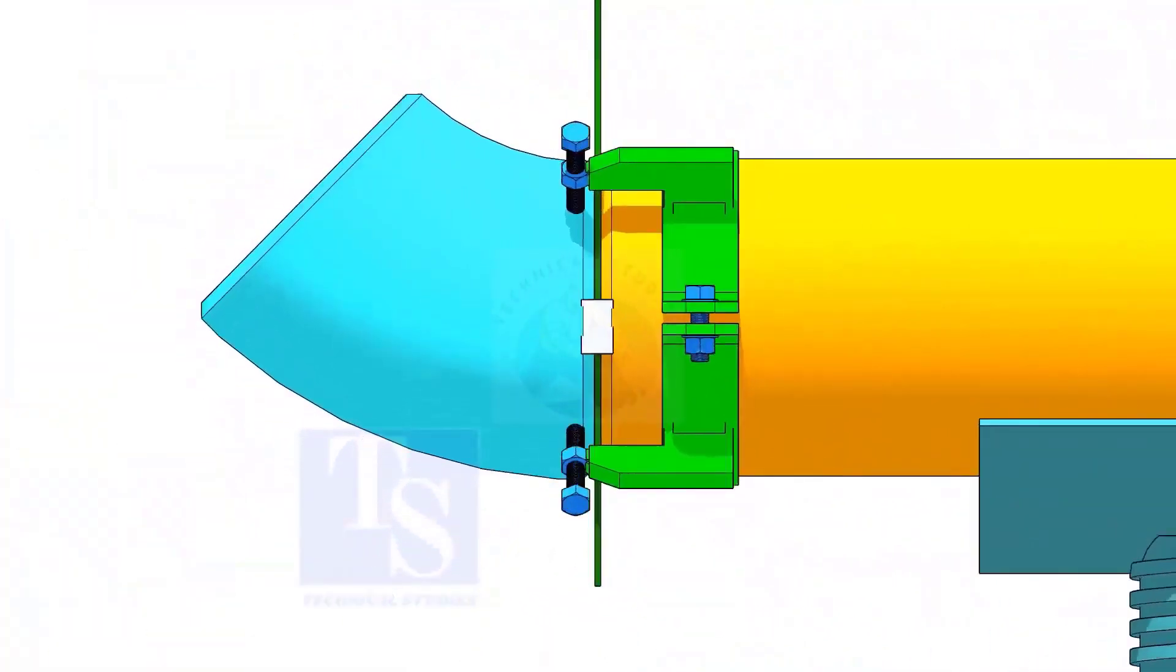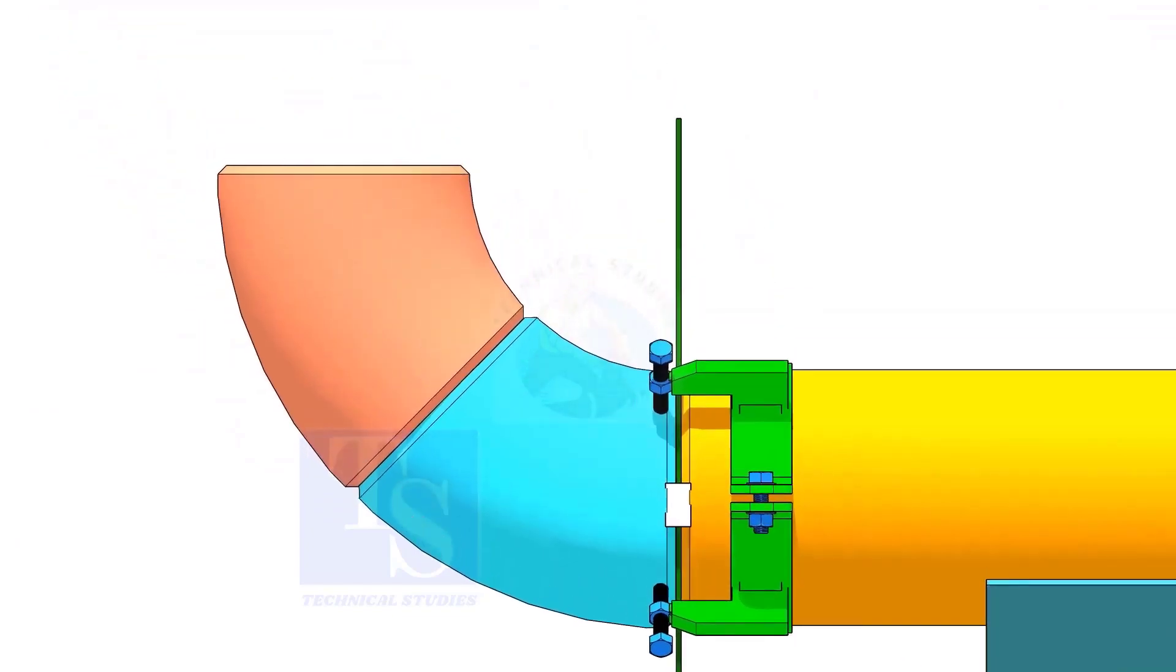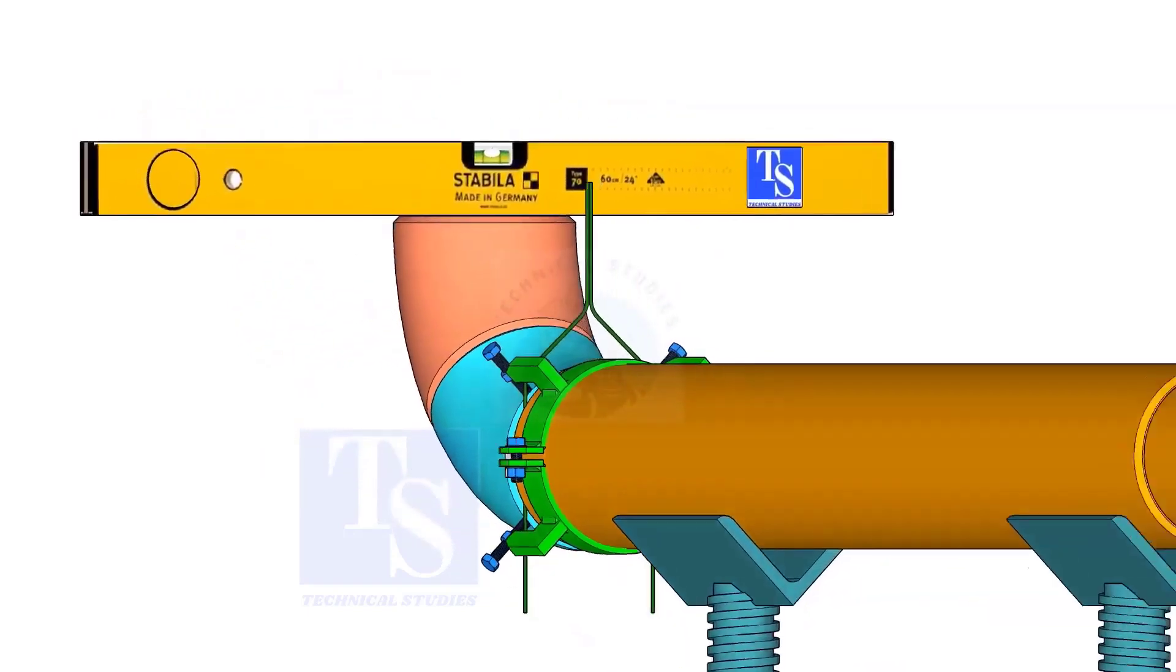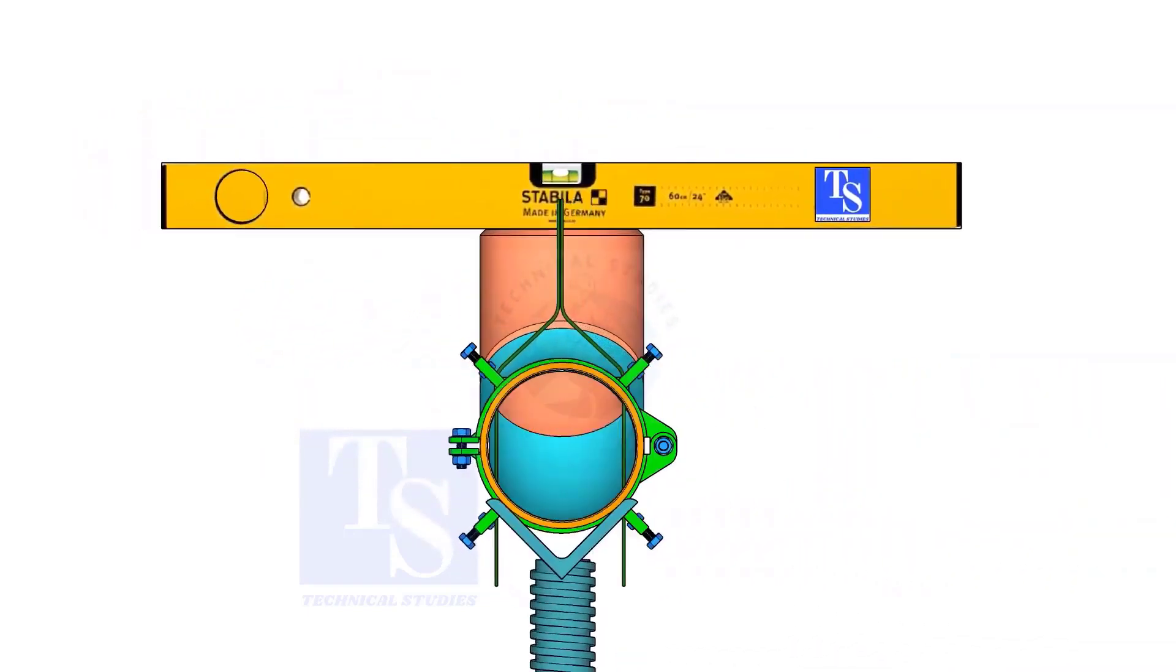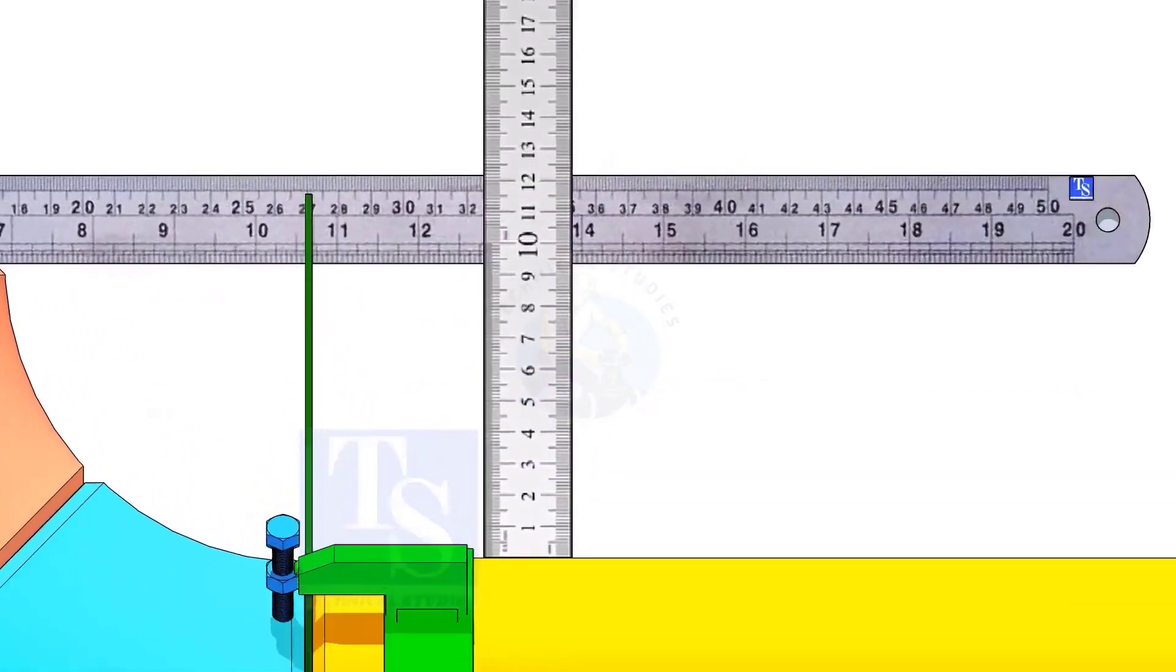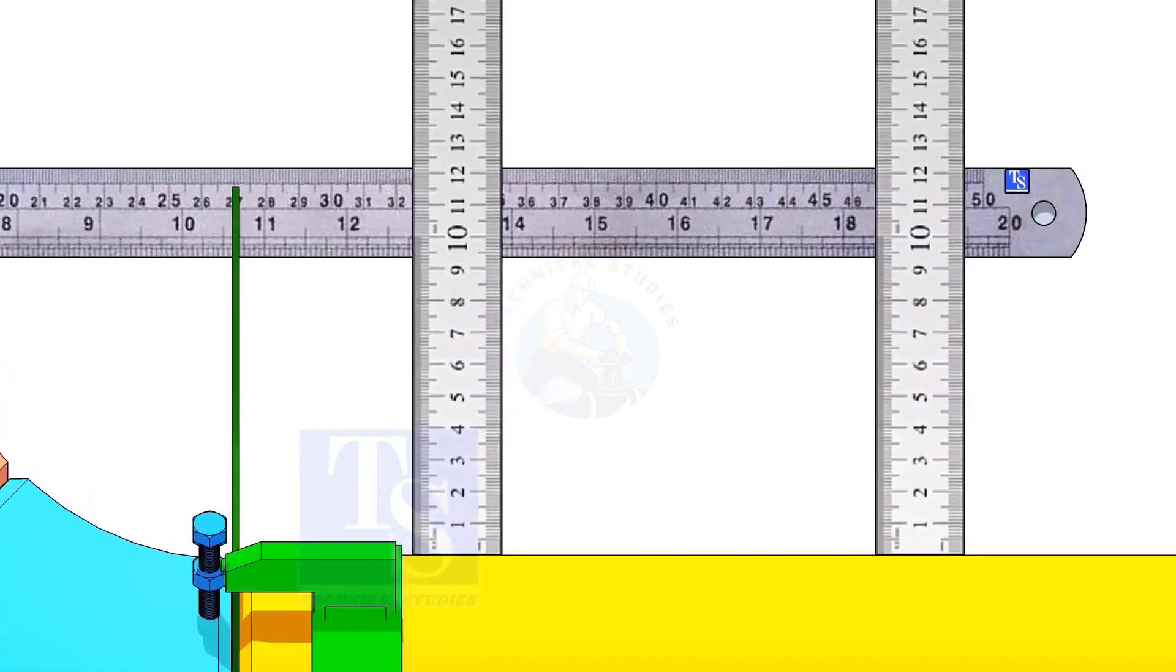Hold another elbow of 45 degree on the top of this elbow. Level this elbow horizontally. Measure the distance, as shown. If correct, tack weld on the top and bottom side of the joint.